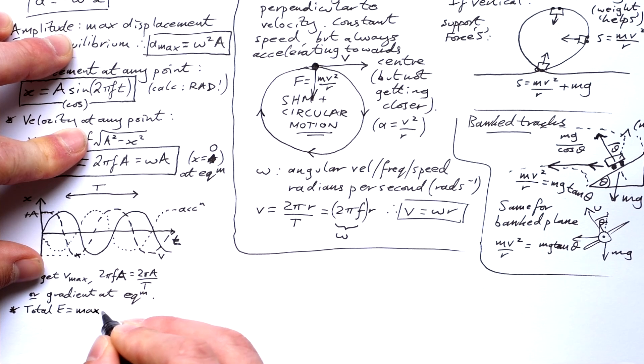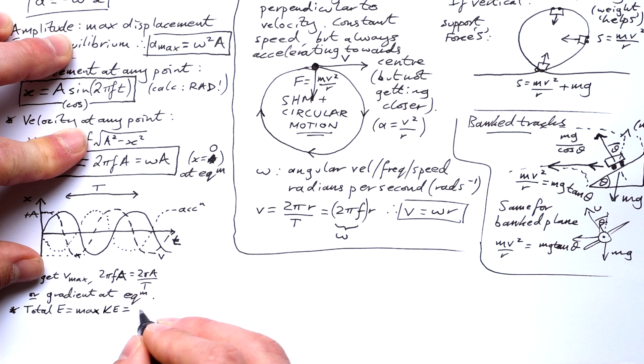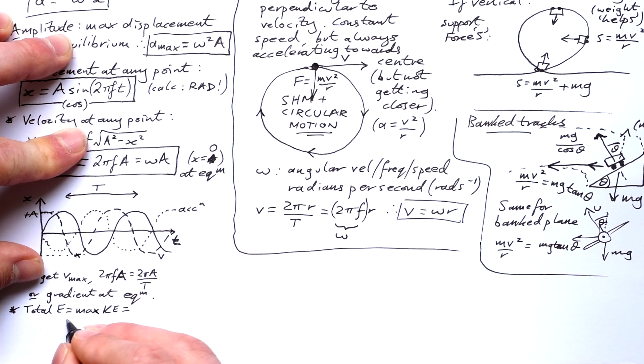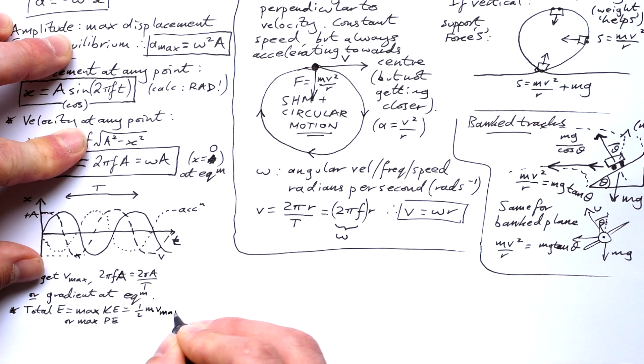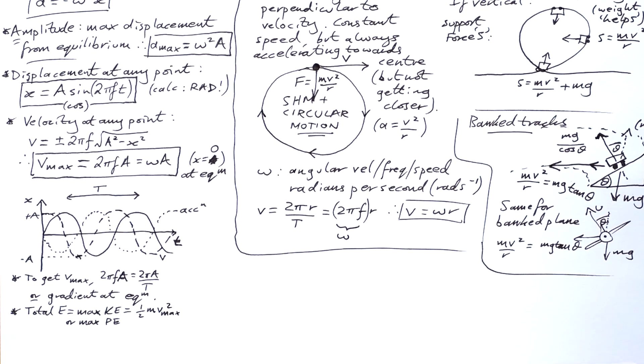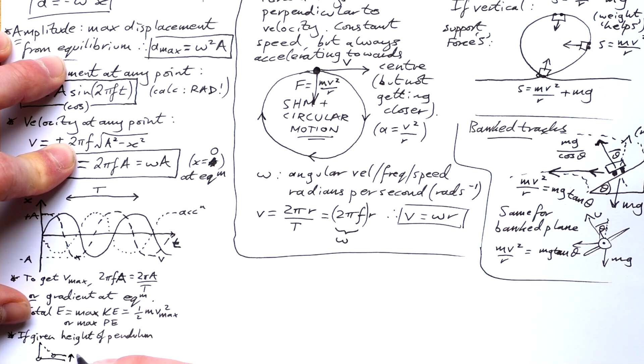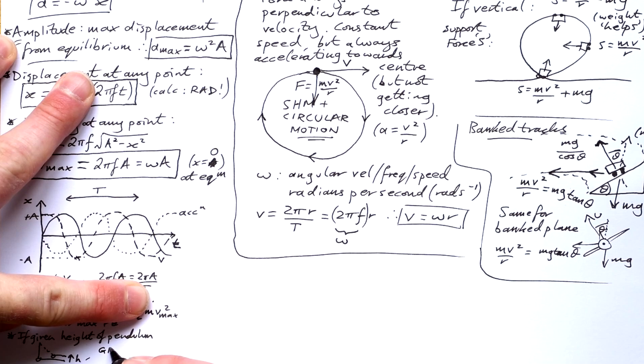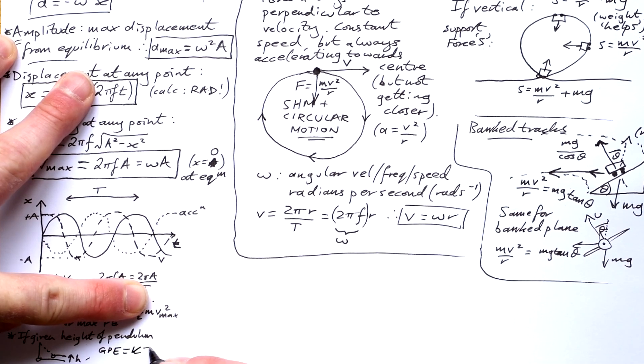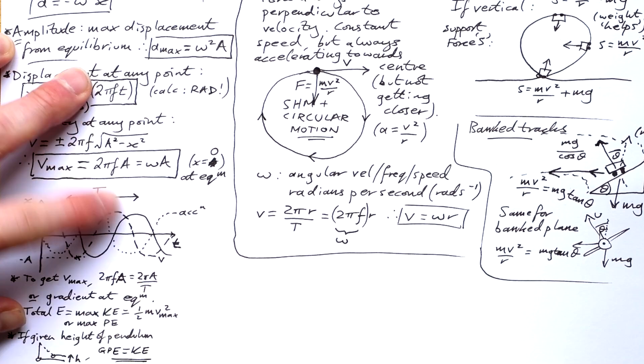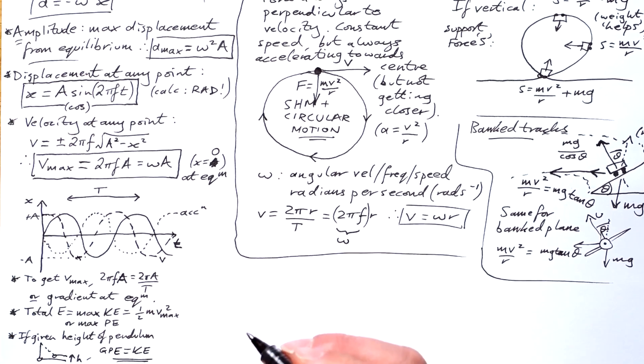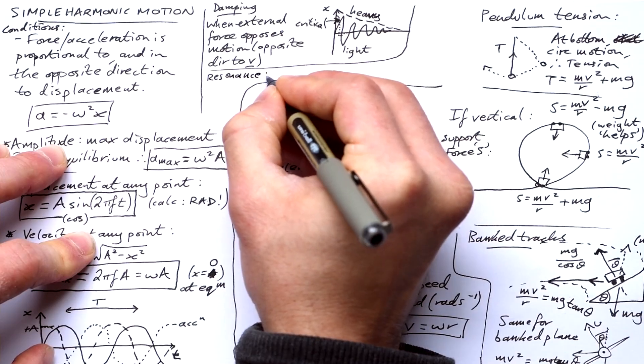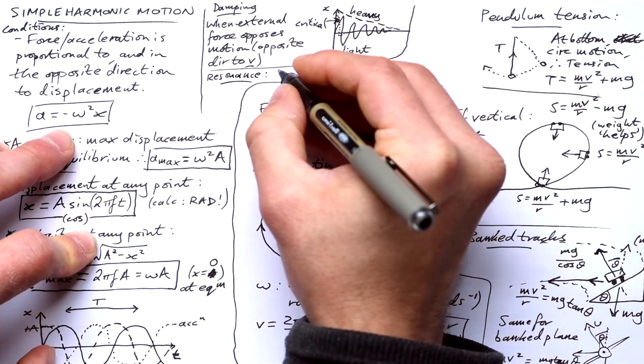Okay. If we're talking about damping, we might as well talk about energy real quick. If we're asked to find the total energy of a system, that's also the same as asking for the maximum kinetic energy. Okay. Or the maximum potential energy as well. But usually we're going to calculate it with half m v max squared. If you're given the height of a pendulum, then chances are you're going to have to calculate what the maximum speed is as it goes through equilibrium using conservation of energy, GPE equals KE. So you don't even need the mass for that.